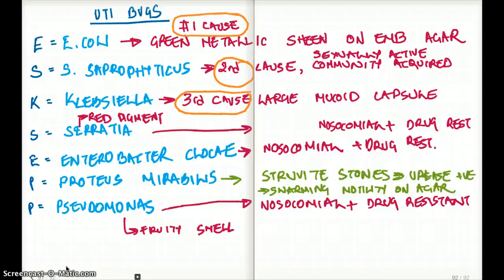Serratia is going to produce red pigment, and they're going to have nosocomial and drug resistance. Enterobacter cloacae, they're also going to be nosocomial and drug resistance.